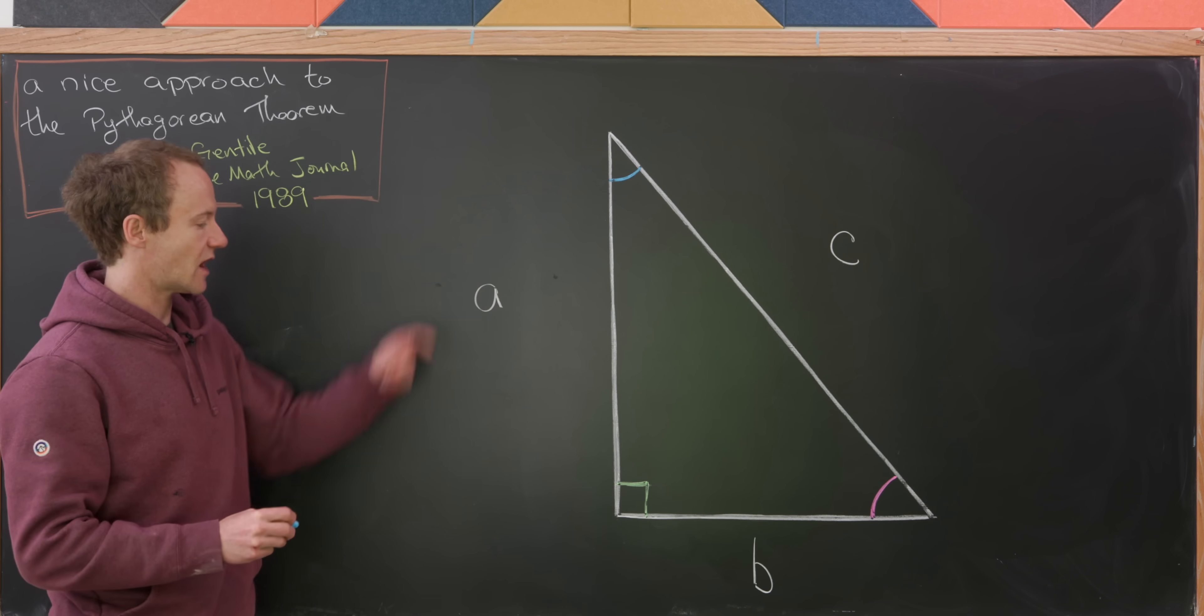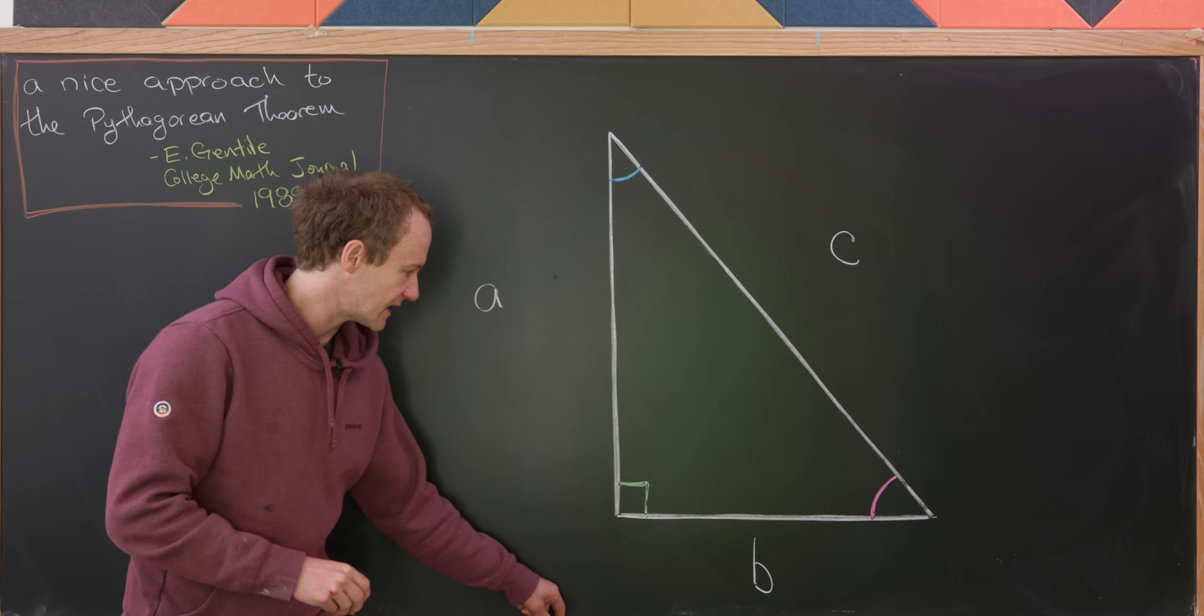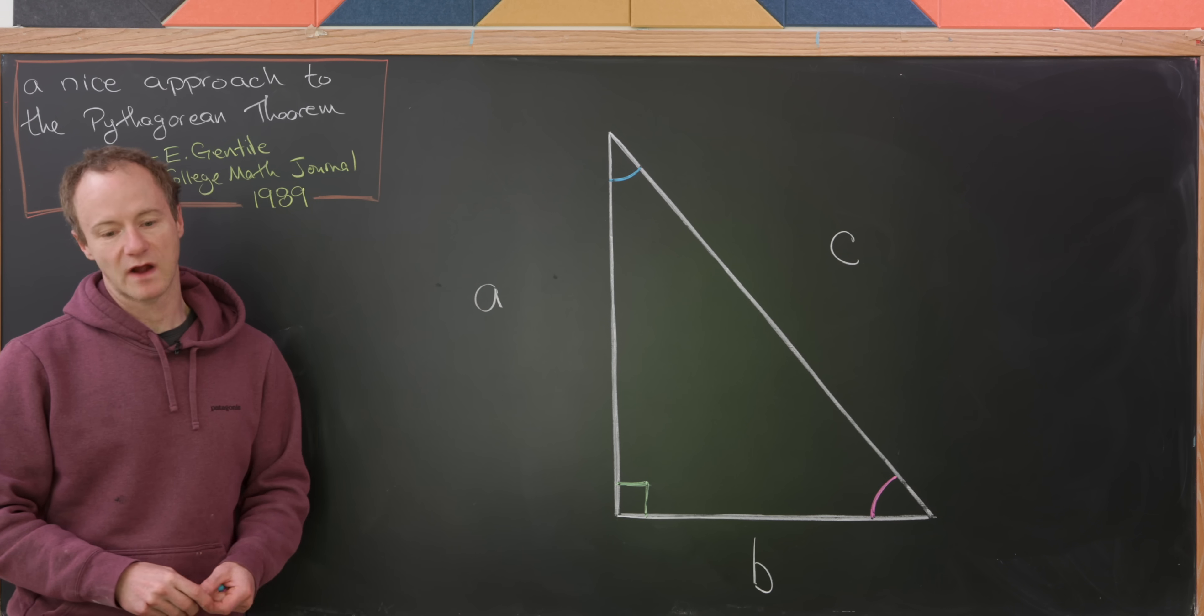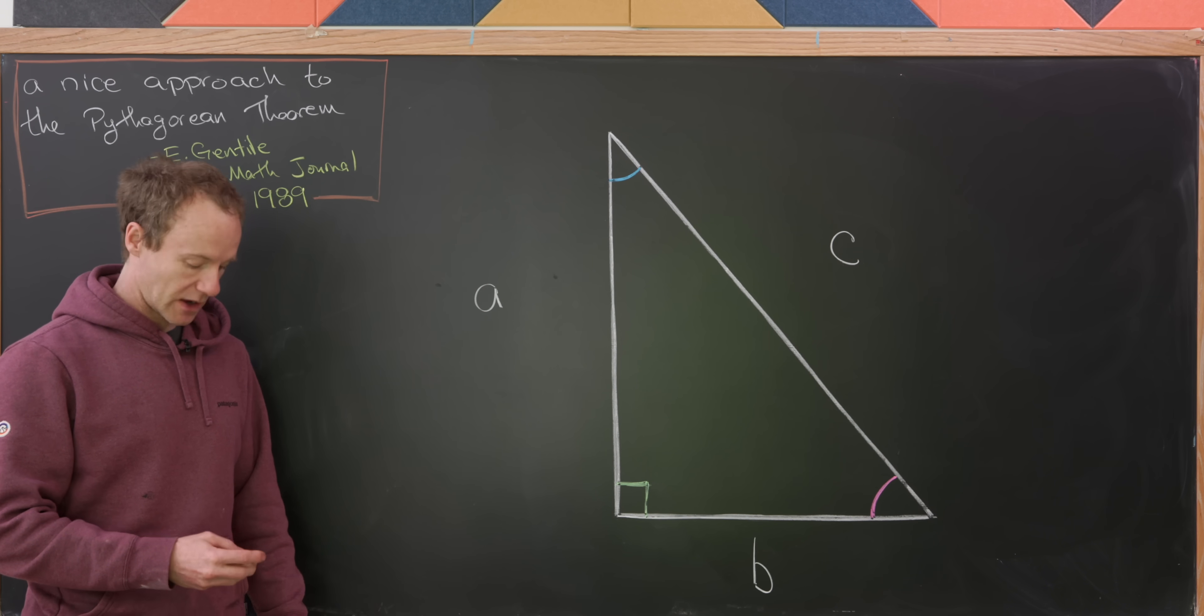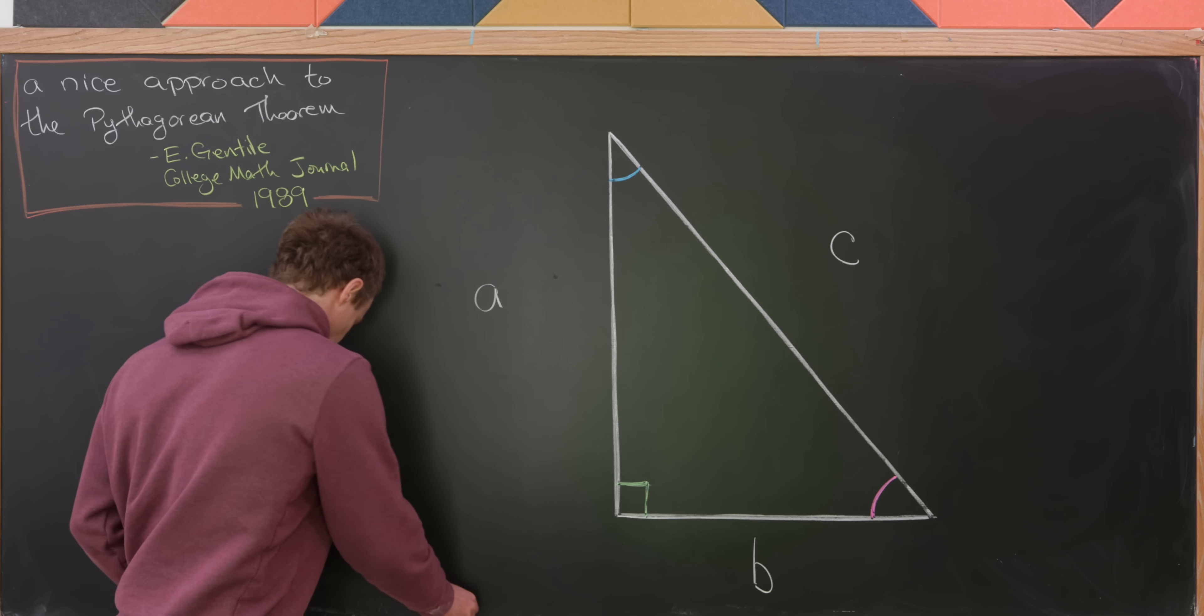So we've got our magenta angle, our blue angle, and then kind of nominally we've got this right angle down here, which is in green.